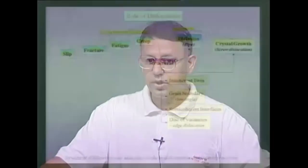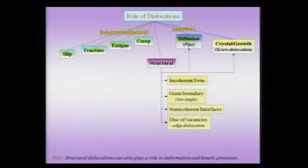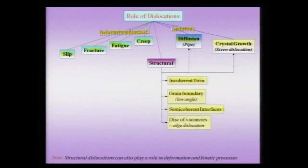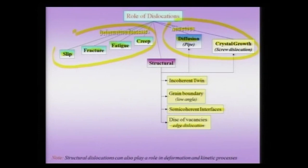As we said, defects can be classified as structural and non-structural. The structural role of dislocations is also very important. For instance, they play a structural role in incoherent twins and in low-angle grain boundaries — both tilt boundaries and twist boundaries — where dislocations are responsible for the tilt or the twist. They also play a very important role in semi-coherent interfaces. For example, a disc of vacancies on a slip plane can be thought of as an edge dislocation.